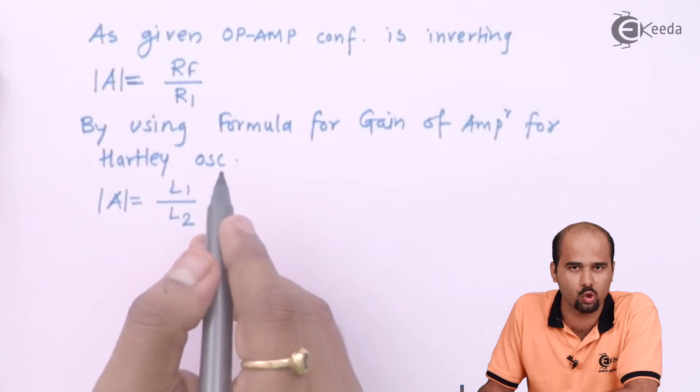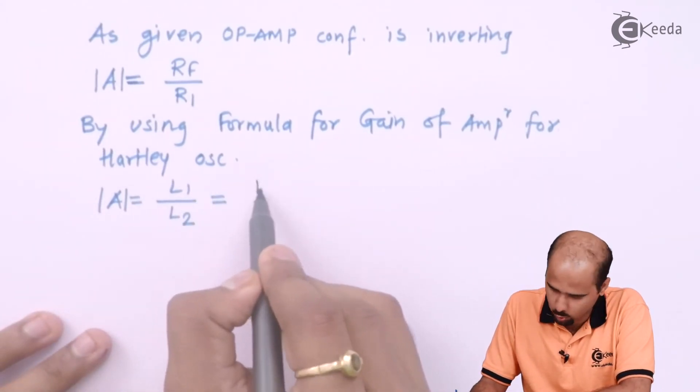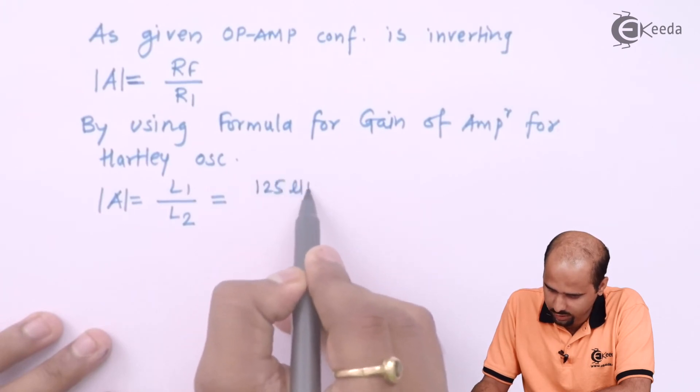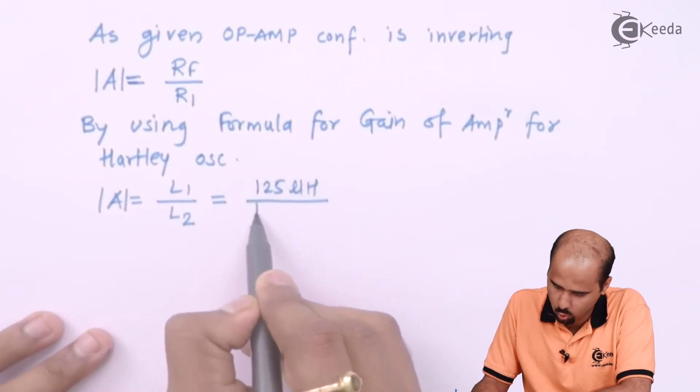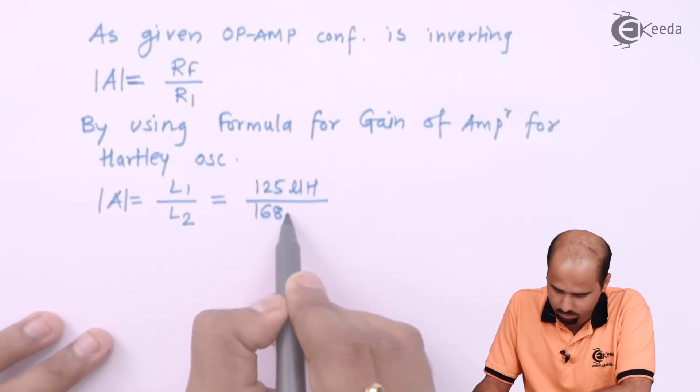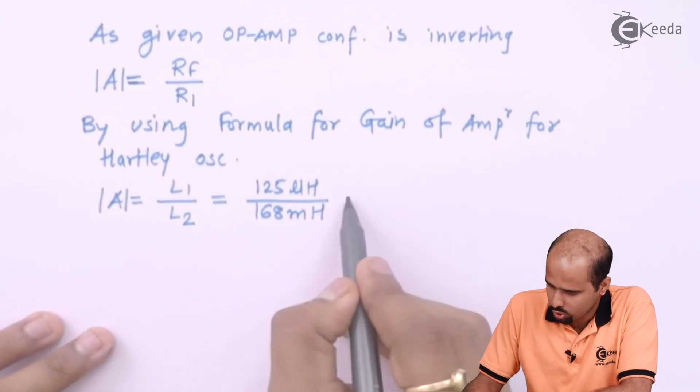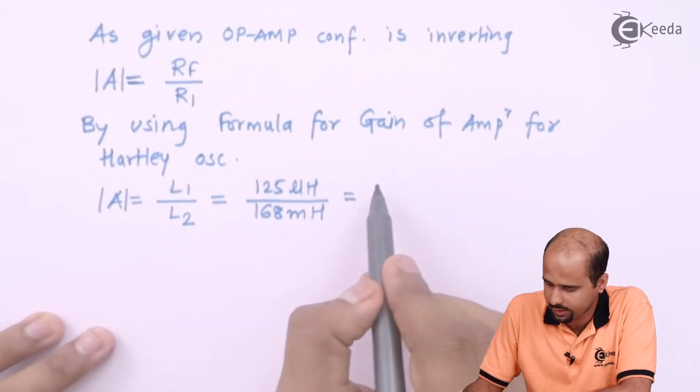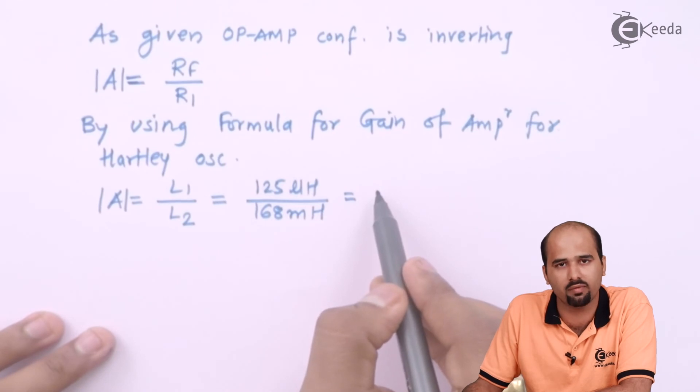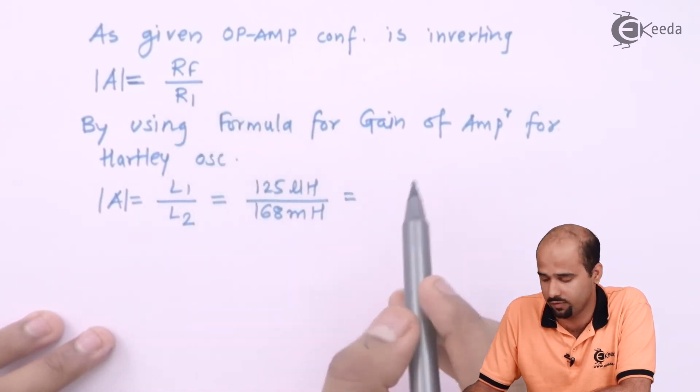now both values are there with me, so we can say that L1 is 125 microhenry and L2 is about 168 mH, right? So just take that particular ratio of A, right? And then we will get that particular value of A as same as the ratio of RF to R1.